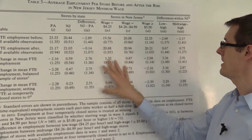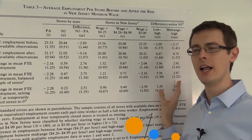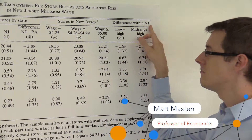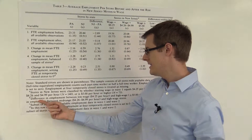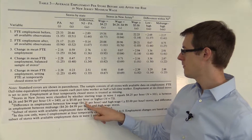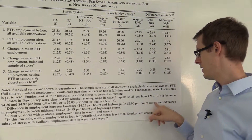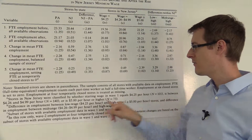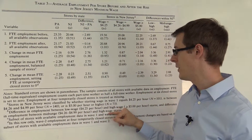So that tells us what's happening here. Let's look at the final column. It says 'differences within New Jersey, see footnote B.' What does footnote B say? Difference in employment between low wage ($4.25 per hour) and high wage stores, and difference in employment between mid-range and high wage stores.